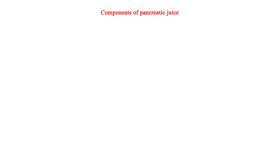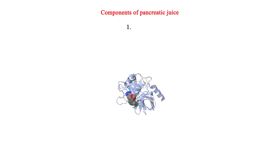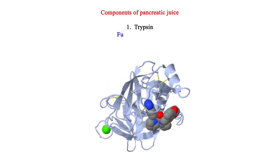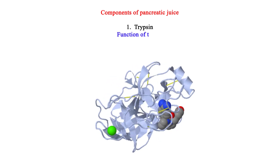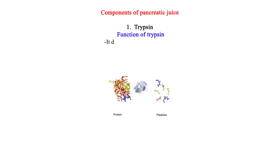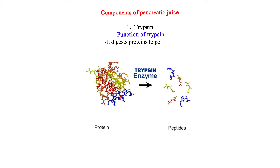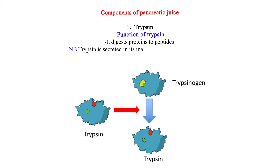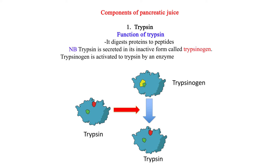Components of Pancreatic Juice. 1. Trypsin. Function of trypsin: It digests proteins to peptides. NB: Trypsin is secreted in its inactive form called trypsinogen. Trypsinogen is activated to trypsin by an enzyme known as enterokinase.